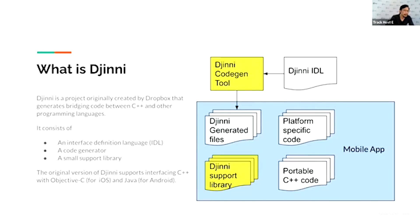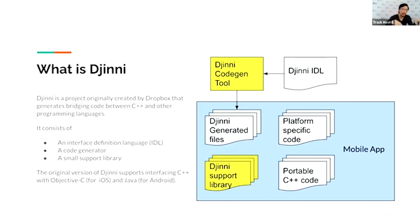So what is Genie? Genie is a project originally created by Dropbox. It generates bridging code between C++ and other programming languages. It has three parts: an interface definition language, a code generator, and a support library. As you can see in the diagram, you prepare a Genie IDL file and feed it to the code generation tool, and it generates a bunch of files. Then you compile the generated file along with your handwritten implementation file and platform-specific code, link with the support library, and generate the mobile app.